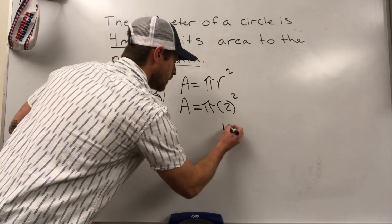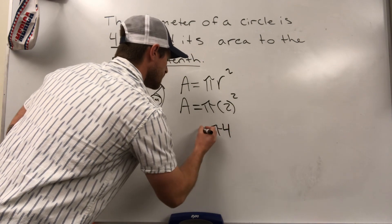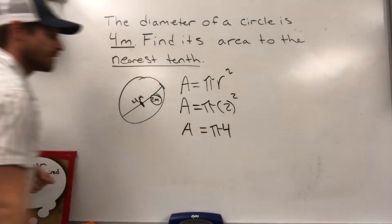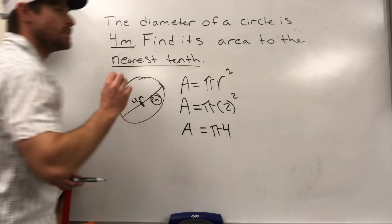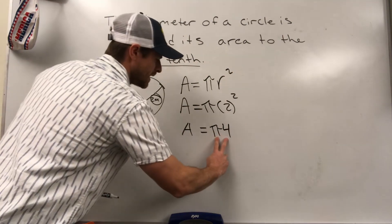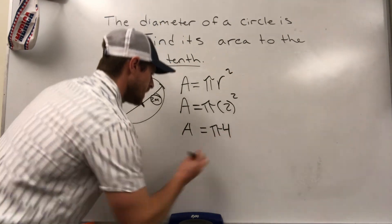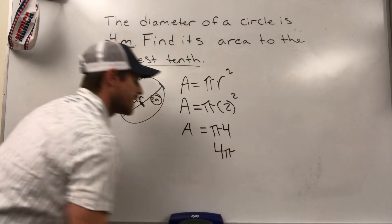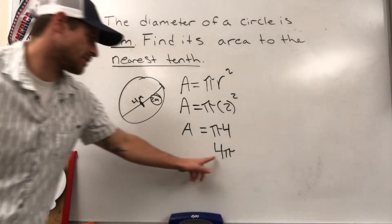Two squared makes a four. Four times pi is equal to our area. Commutative property of multiplication means I can just flip those. Mathematicians would want to see the four in front of the pi, giving it as a coefficient.